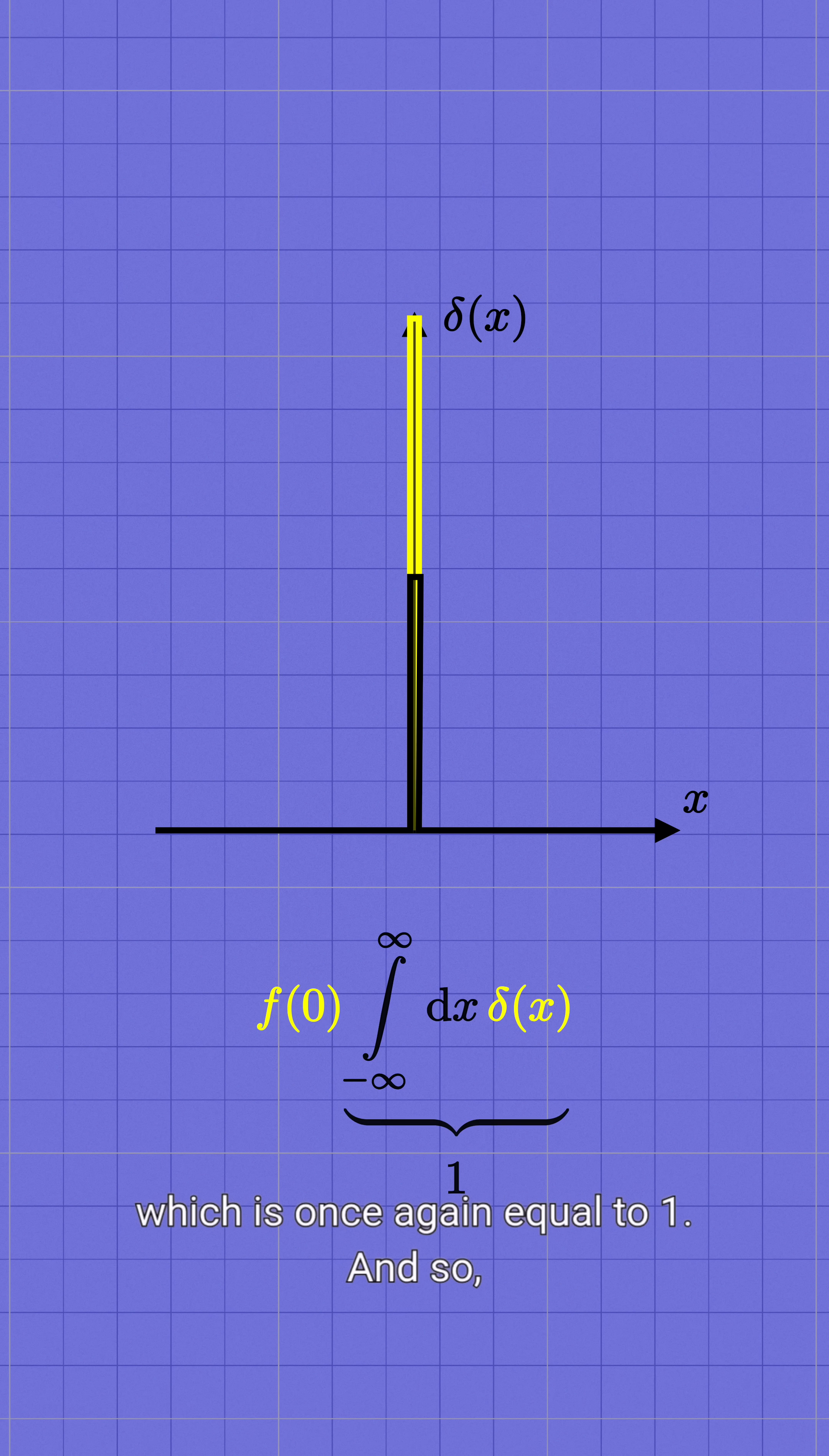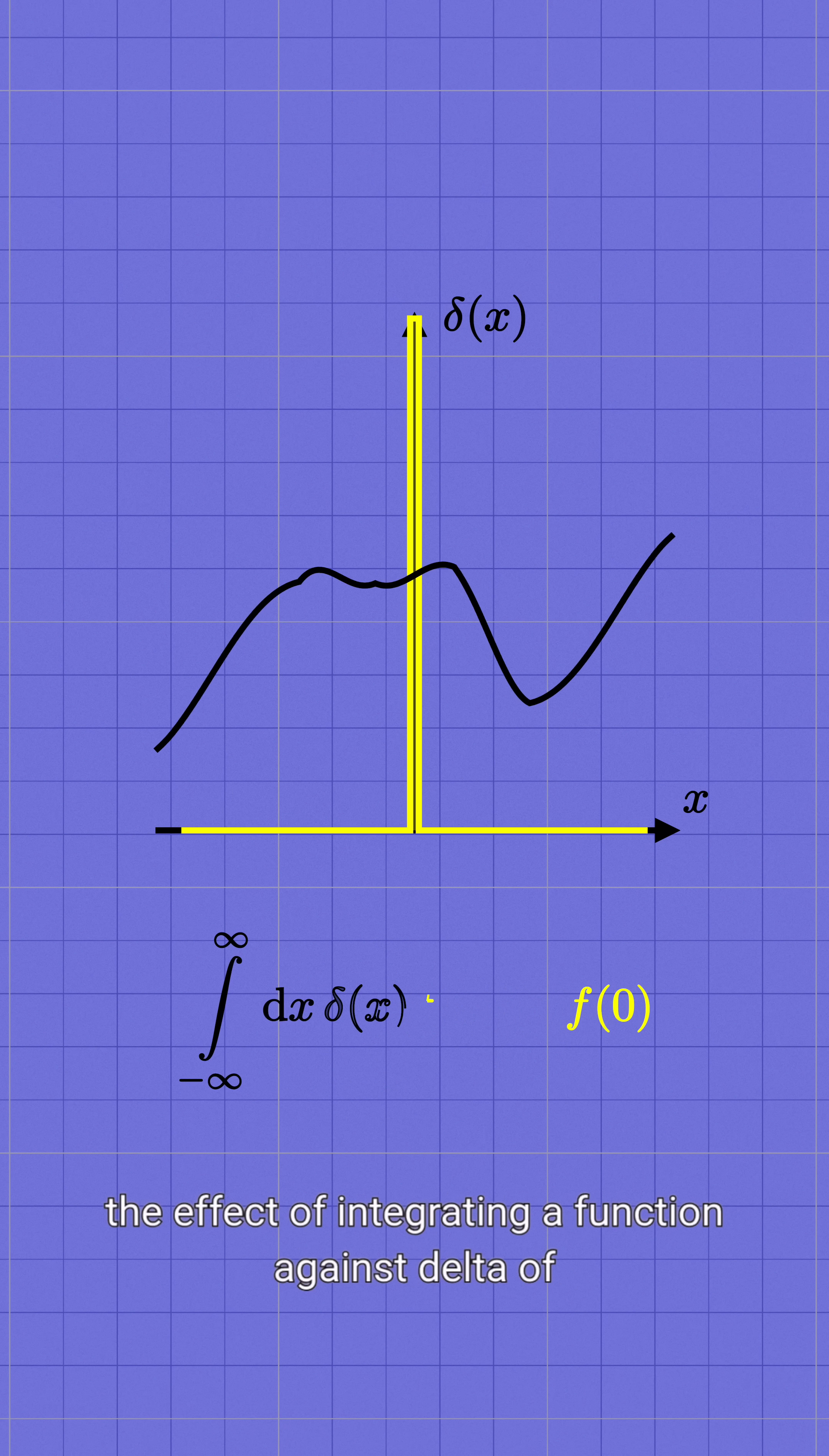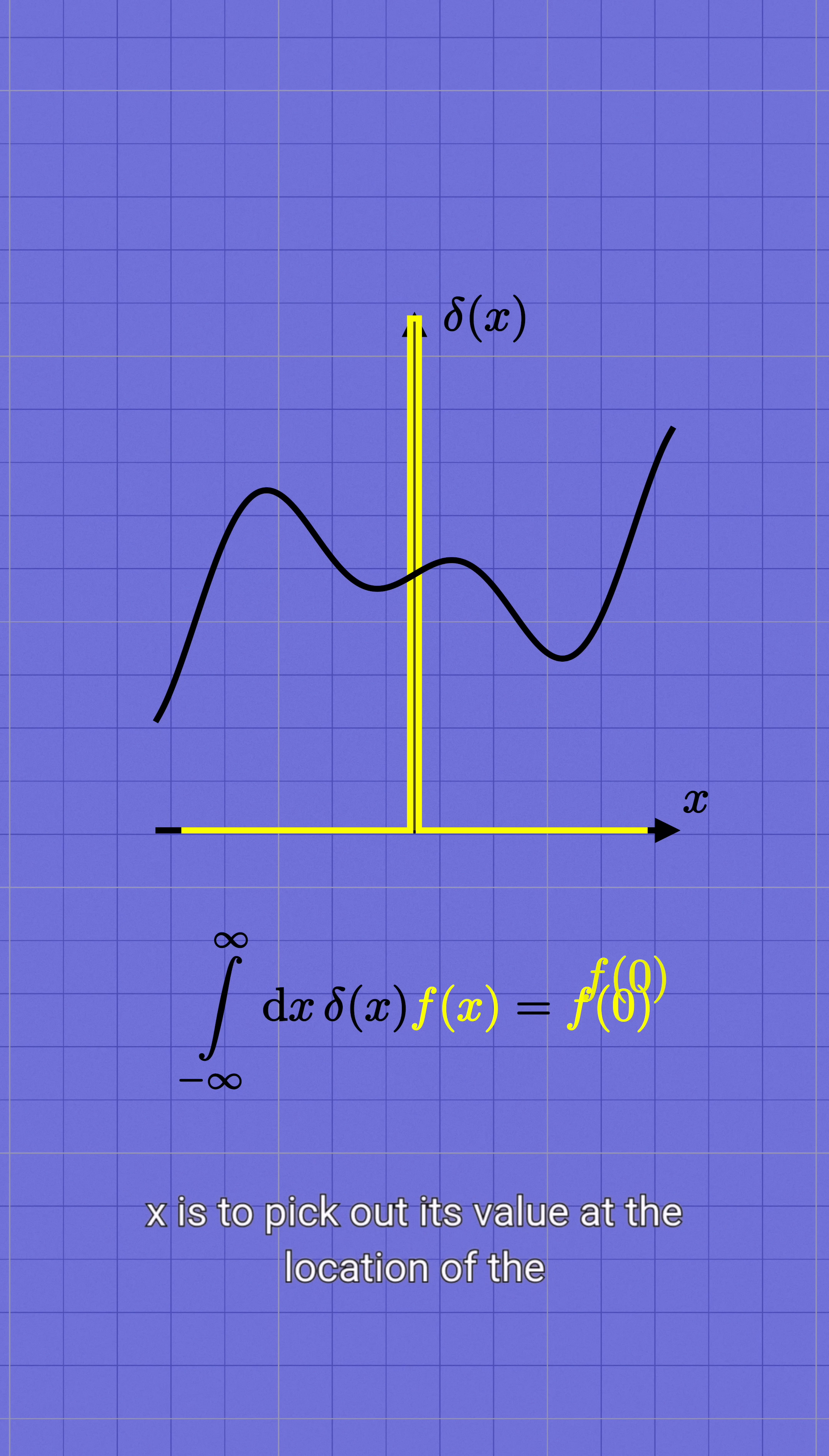Which is once again equal to 1. And so the effect of integrating a function against delta of x is to pick out its value at the location of the spike.